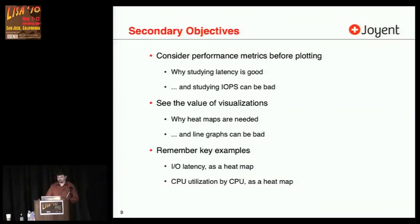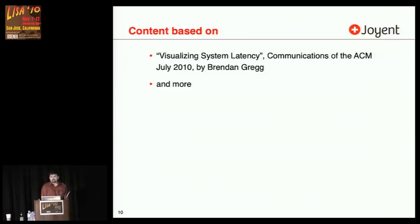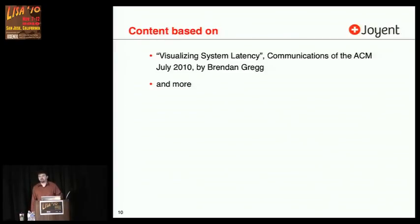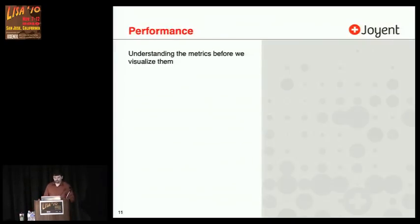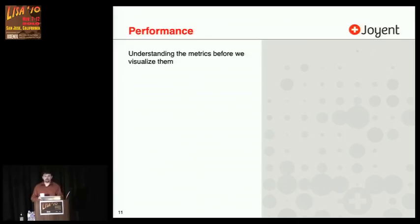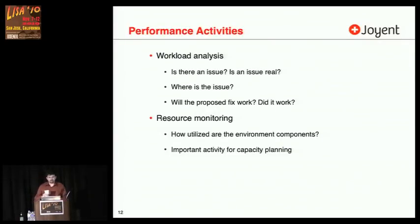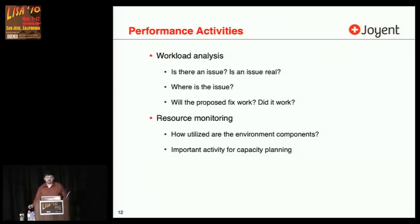I'll make it clear why these are particularly important. Much of this talk is based on 'Visualizing System Latency,' an article I wrote for Communications of the ACM, and some new material that I've included. The first section is on performance. I'd like to explain the metrics before we reach for a plotting tool, so that we understand what we're doing with them. Here I've broken it up into two areas: workload analysis and resource monitoring.